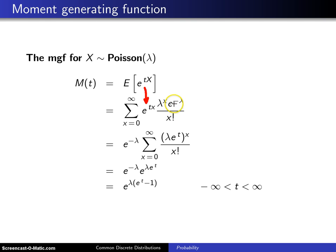Notice that e to the minus lambda does not involve x, so it can be brought out front of the summation. What is left is x factorial in the denominator. When you multiply e to the t times x times lambda to the x, that's the same as lambda e to the t raised to the x power.